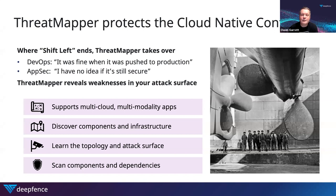ThreatMapper is in the business of protecting cloud-native applications, typically running in multi-cloud environments — complex, multiple points of presence and multi-modality. They may be predominantly Kubernetes-based or Docker-based, but ThreatMapper also protects components which are serverless, running in Amazon Fargate, or even bare metal or virtual machines. If you're managing the security of modern cloud-native applications running in cloud or on-premise Kubernetes-like environments, ThreatMapper is an ideal solution for you.